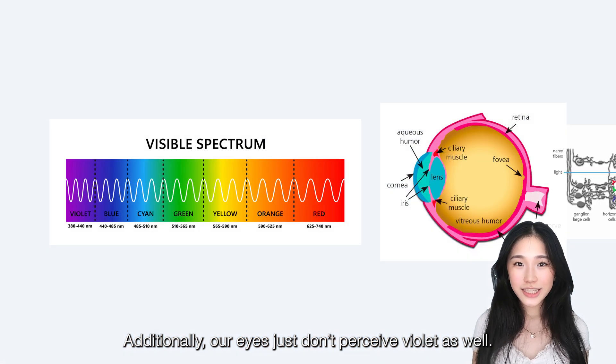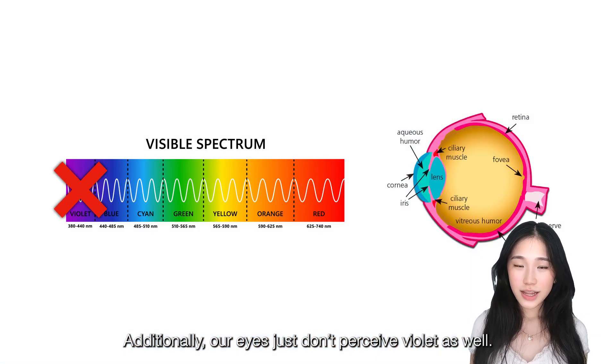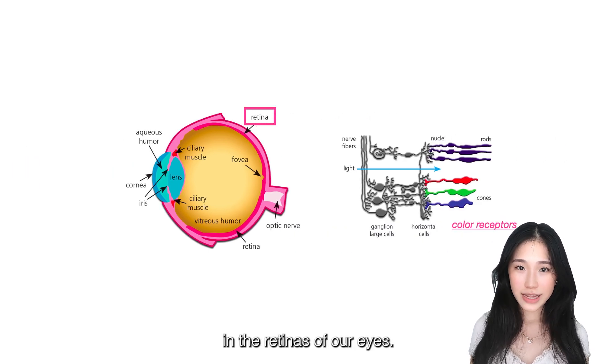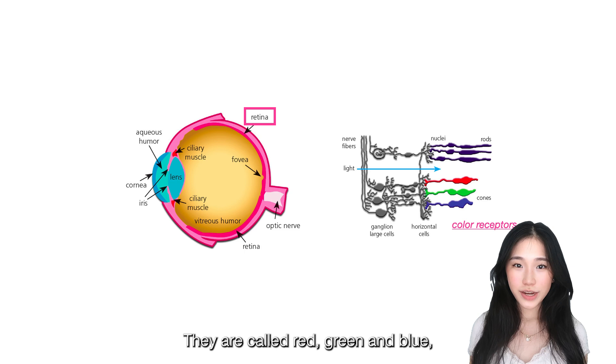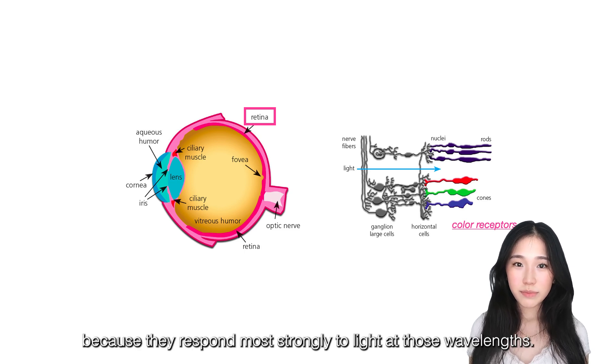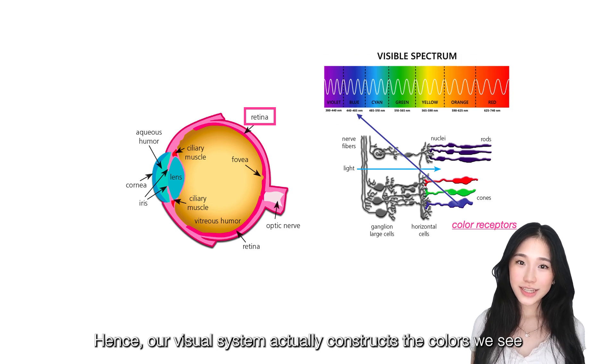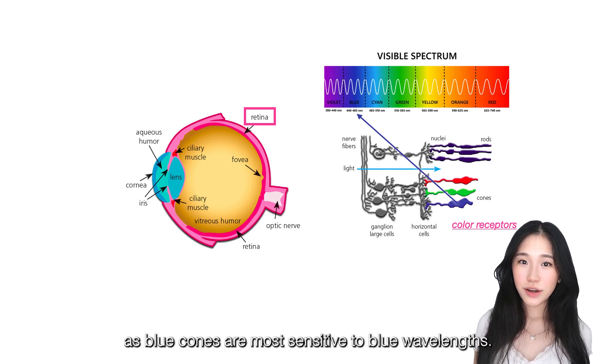Additionally, our eyes just don't perceive violet as well. We have three types of color receptors known as cones in the retinas of our eyes. They are called red, green, and blue because they respond most strongly to light at those wavelengths. Hence, our visual system actually constructs the colors we see as blue cones are most sensitive to blue wavelengths.